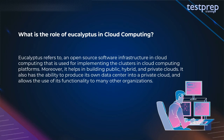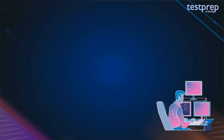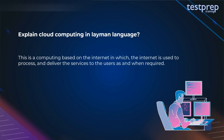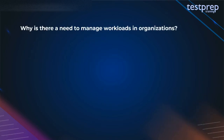Question 25: What is the role of Eucalyptus in cloud computing? Eucalyptus is an open source software infrastructure in cloud computing used for implementing clusters in cloud computing platforms. It helps in building public, hybrid, and private clouds. It also has the ability to convert a data center into a private cloud and allows use of its functionality to many other organizations. Question 26: Cloud computing in layman's language is computing based on the internet, where the internet is used to process and deliver services to users as and when required.